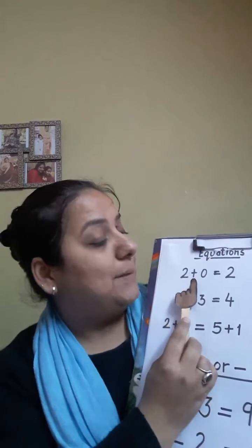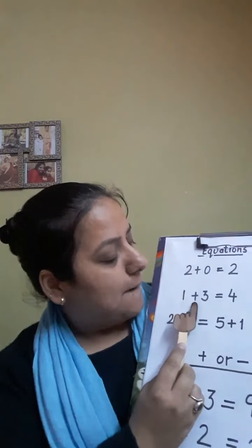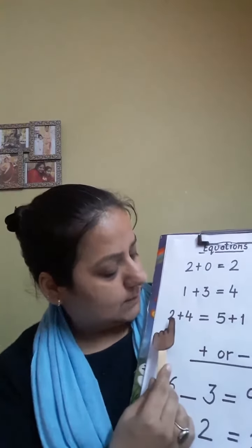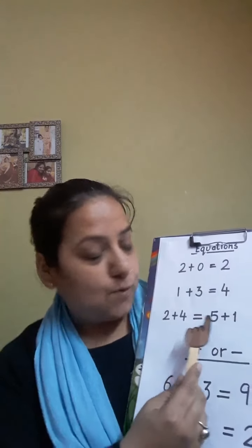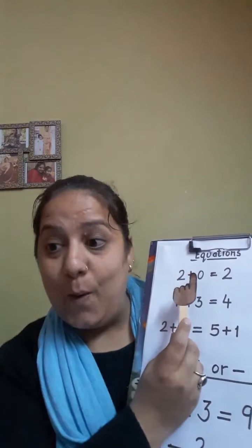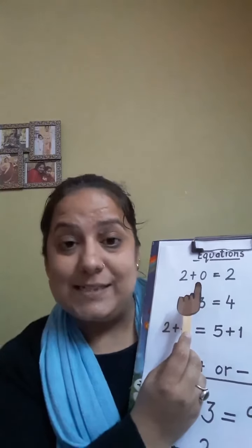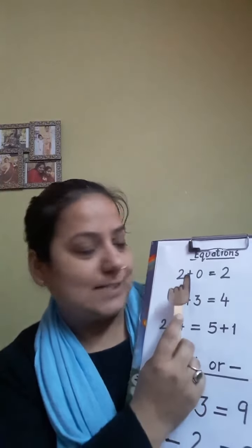2 plus 0 equals to 2. 1 plus 3 equals to 4. 2 plus 4 equals to 5 plus 1. So let's go through these examples once again and see how it works.